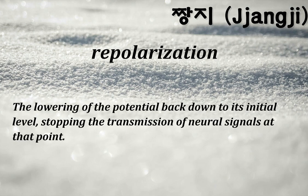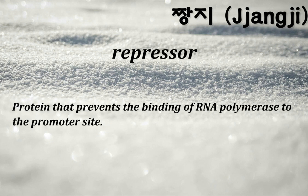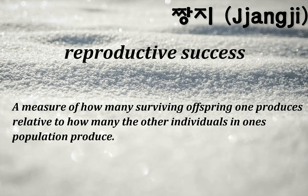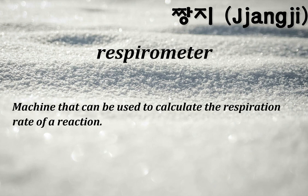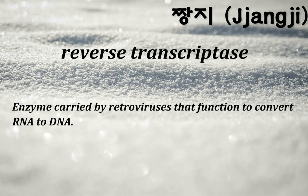Repolarization: the lowering of the potential back down to its initial level, stopping the transmission of neural signals at that point. Repressor: protein that prevents the binding of RNA polymerase to the promoter site. Reproductive success: a measure of how many surviving offspring one produces relative to how many the other individuals in one's population produce. RER: rough endoplasmic reticulum. Respirometer: machine that can be used to calculate the respiration rate of a reaction.